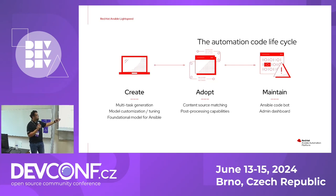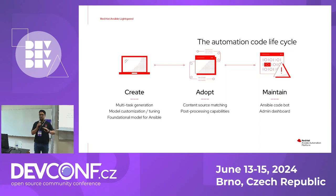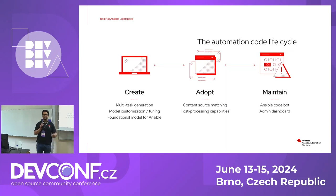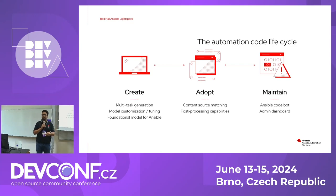Then comes the adoption part, where your content source matching and all the post-processing happens. And at last comes the maintenance part — what if, once the code is ready, how are you going to maintain it? We have a Codebot which would automatically check your entire Ansible repository and create pull requests for you to solve the issues. Is anyone using Ansible Lint? So you see the suggestions of Ansible Lint — what are the next steps? Someone just goes into the repository, tries to fix the code, creates the entire pull request. What if this Codebot will do all that manual stuff on your behalf?